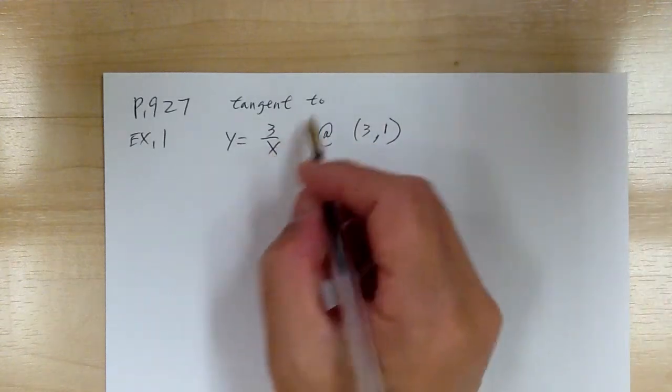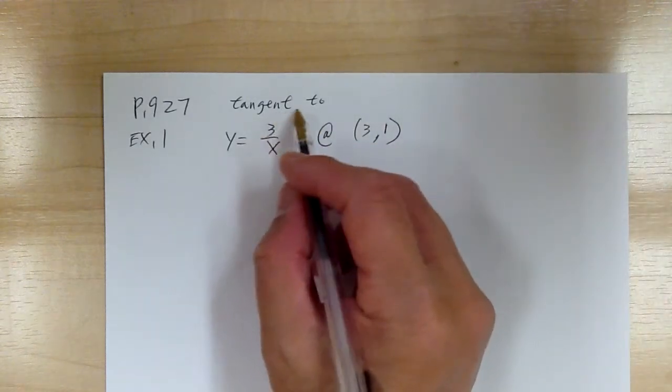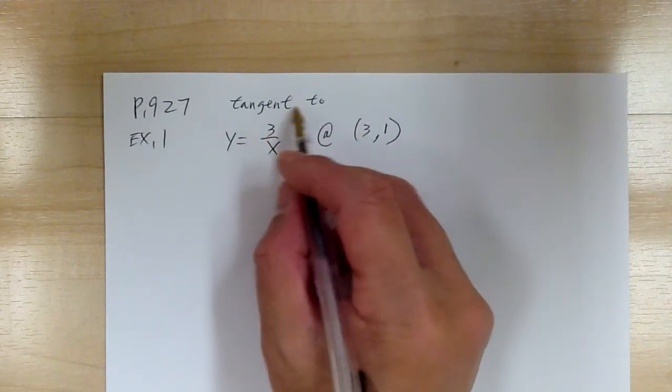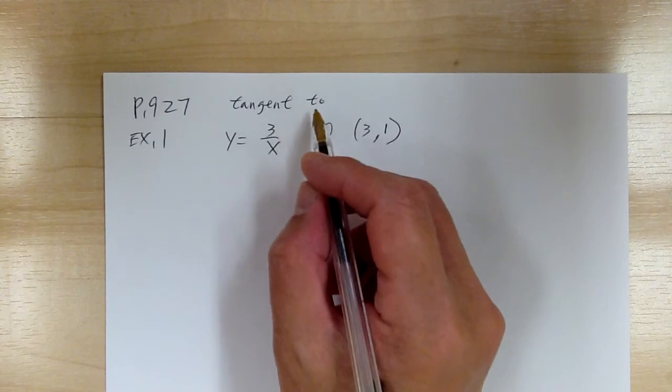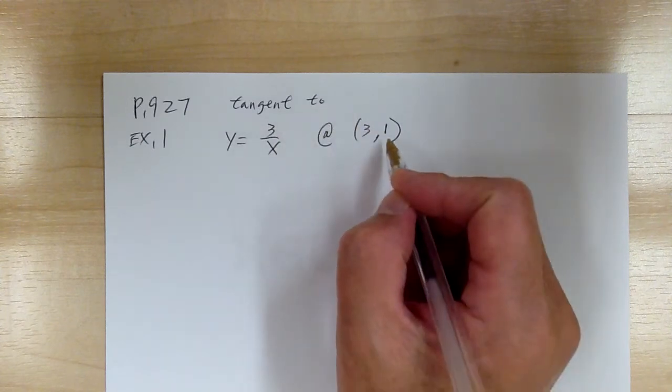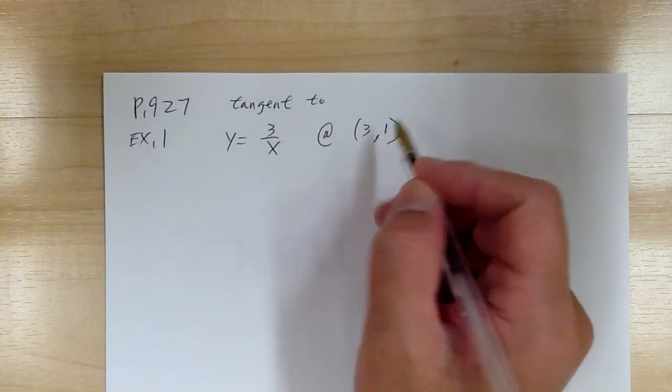To find a line — so you're looking for this tangent line — you need to find the slope and the point.